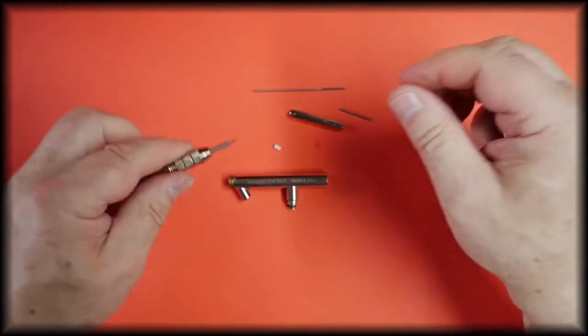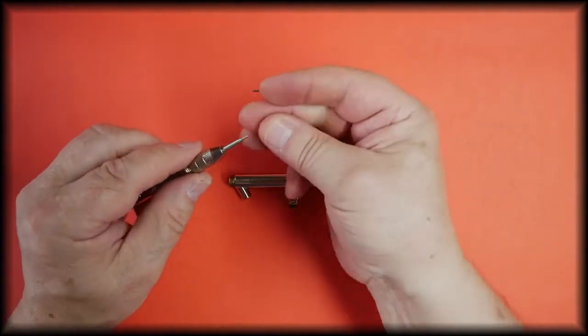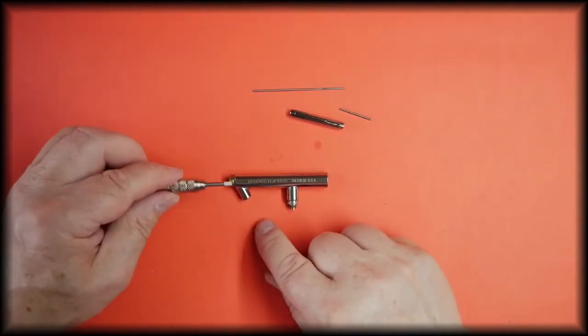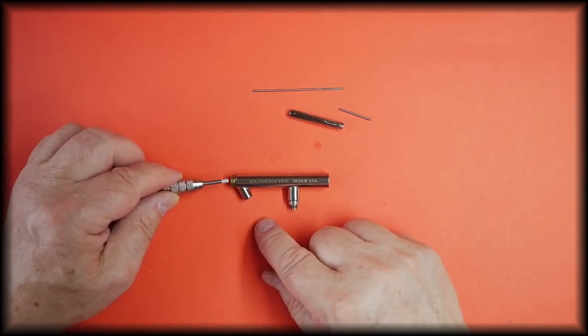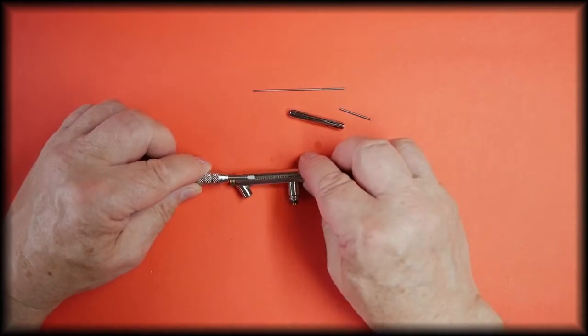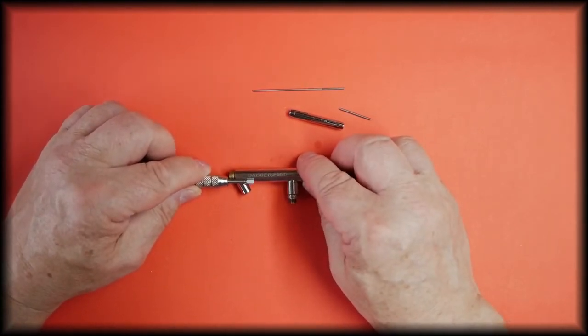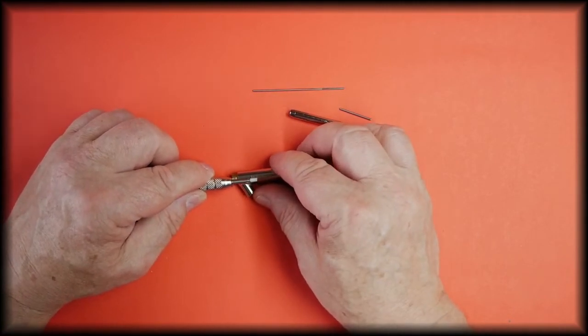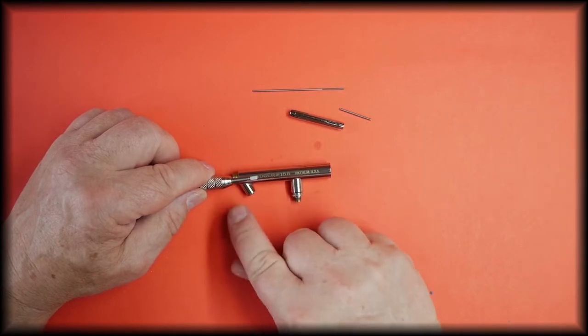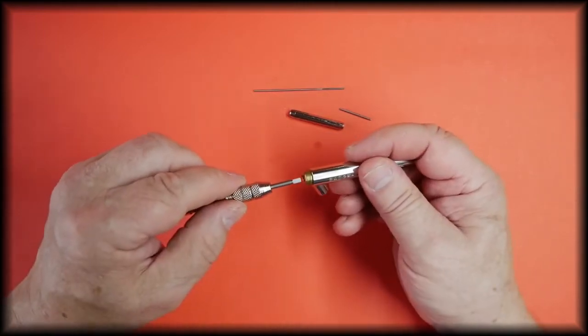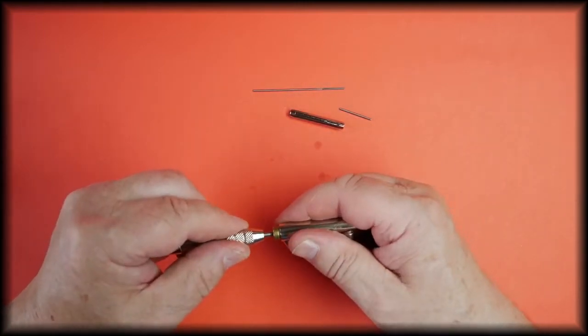Then your needle bearing fits on as such and the needle bearing goes in from the front of the airbrush and slides back so it sits just behind—on this particular airbrush it's where the paint bottle goes into the airbrush—it just fits just past that chamber there and we just push that in.